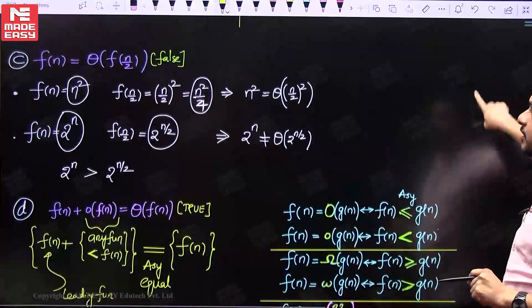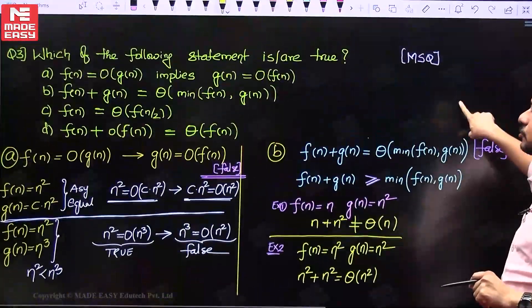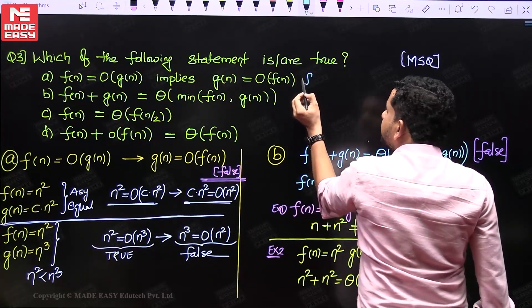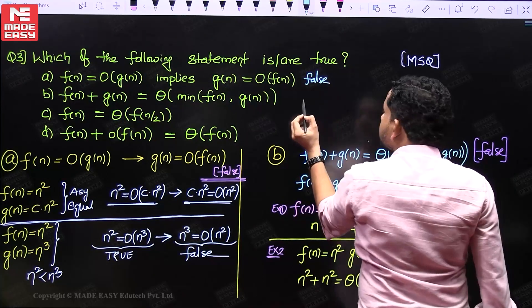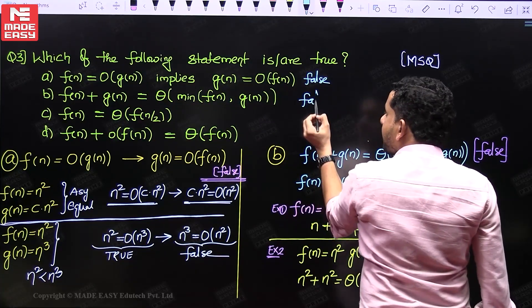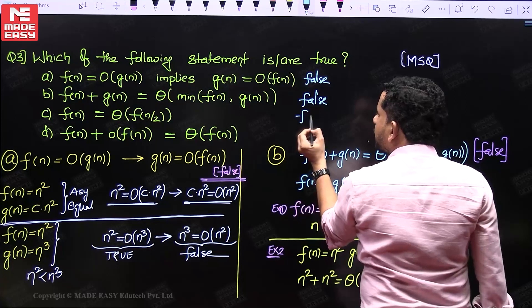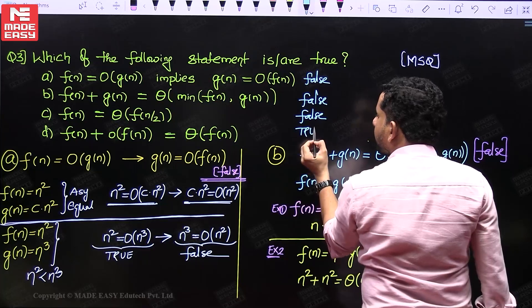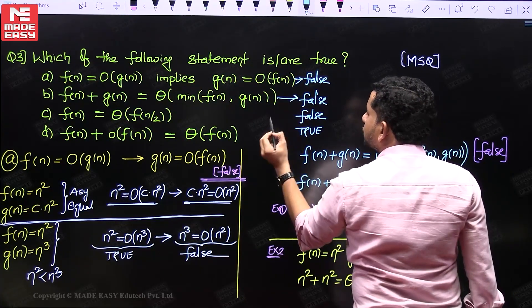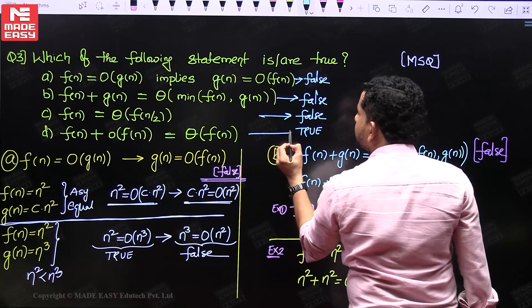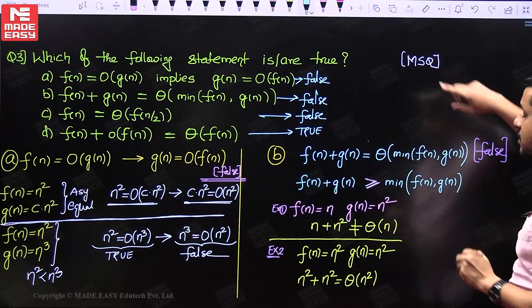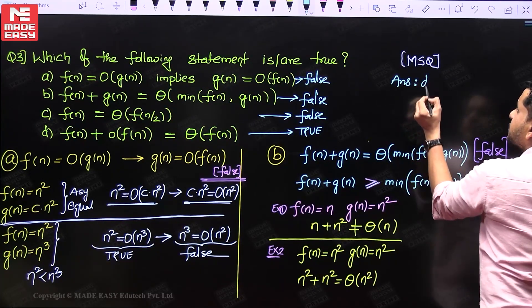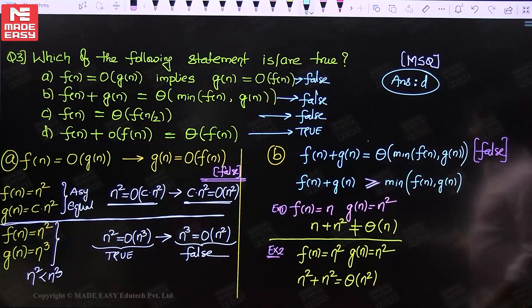These are the four given options. The first statement is false, the second statement is false, the third statement is also false, and the fourth statement is true. Even though it is given as a multiple selection question, only one option is true. D is true.